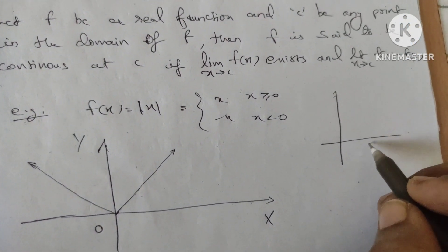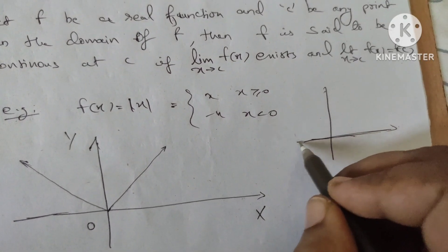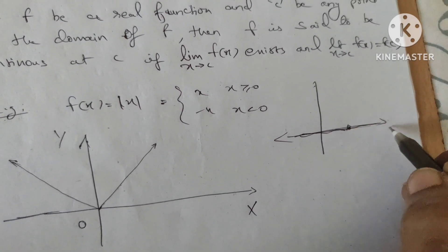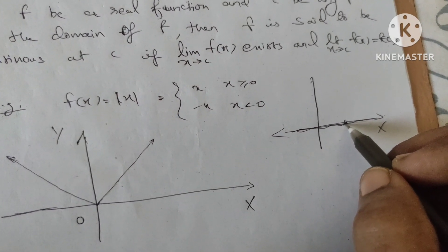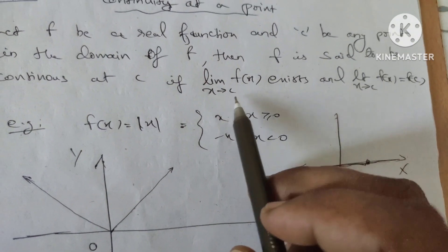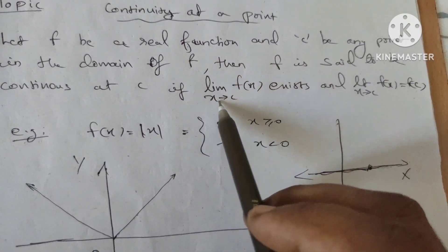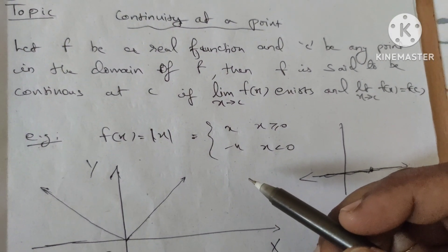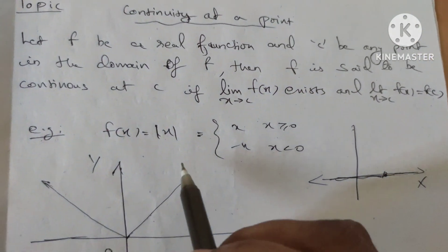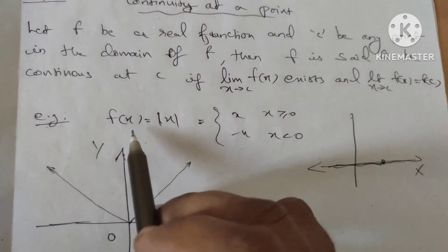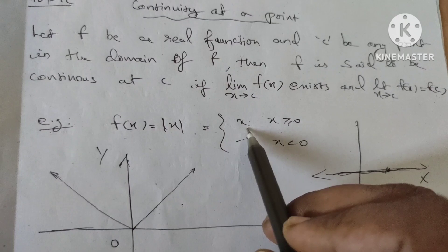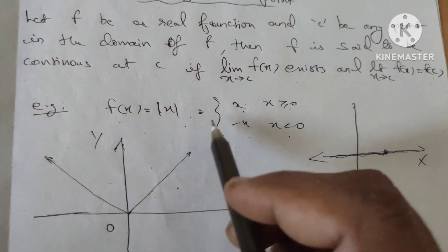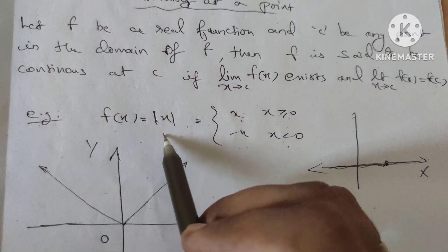Let's take a function. This is our domain — the points on the x-axis form the domain. For the domain, f(x) is equal to mod x, where f(x) equals x when x is greater than or equal to 0, and minus x when x is less than 0. Here I am going to draw the graph of mod x.